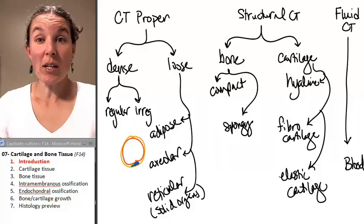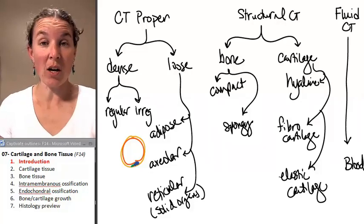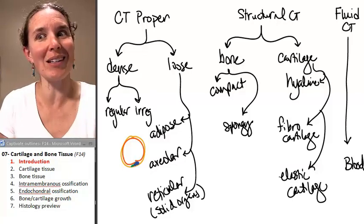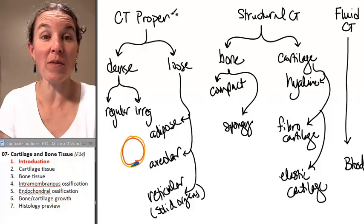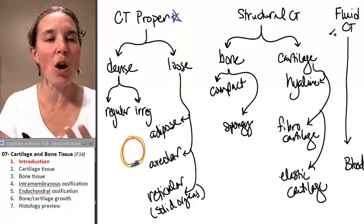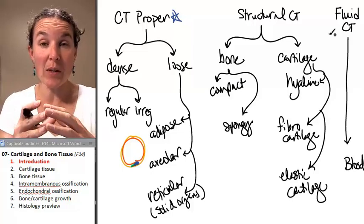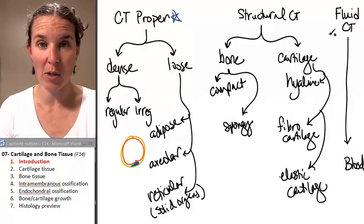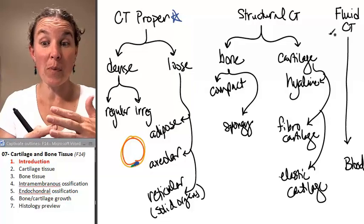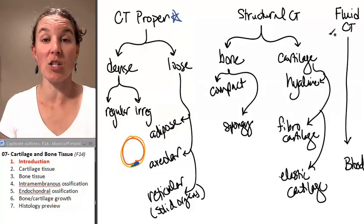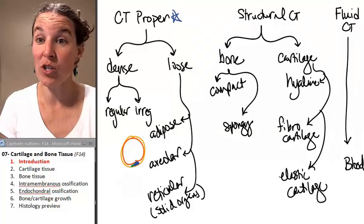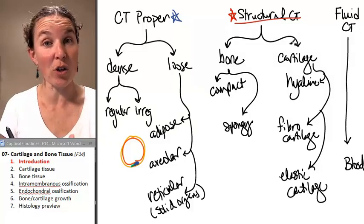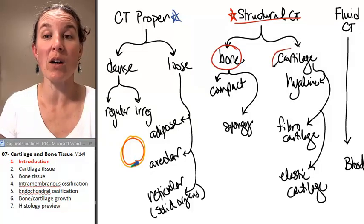Hey, you guys. So today we're going to talk about bone tissue and cartilage tissue. Hopefully this visual is totally familiar to you because we've been here, done that, and we already know that we've dealt with connective tissue proper. You know that connective tissue is a tissue made up of cells found within a matrix of ground substance and fibers. We talked about all the normal kinds of connective tissue, and today we're going to deal with our structural types of connective tissue. We have two main kinds of structural connective tissue, and that would be bone and cartilage tissue.